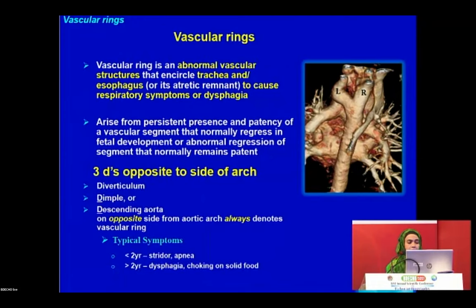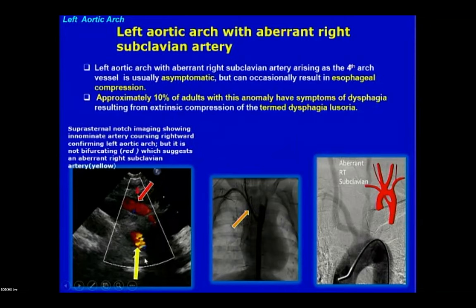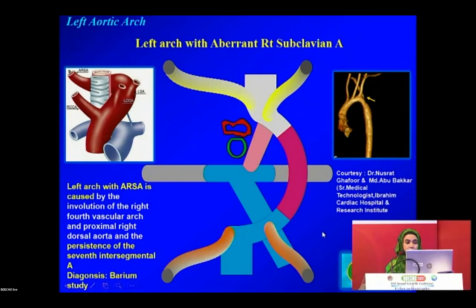A vascular ring is an abnormal structure that encircles the trachea and esophagus. An example is left aortic arch with aberrant right subclavian artery, which can cause dysphagia in adults — known as dysphagia lusoria. On suprasternal view, if the first division does not bifurcate, we look for an aberrant right subclavian artery. This anomaly is due to persistence of the seventh intersegmental artery.